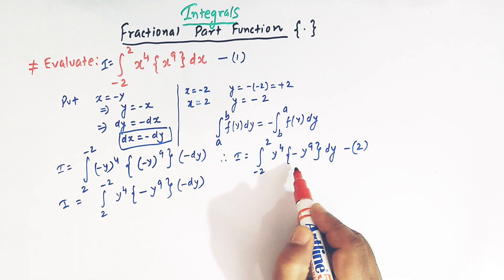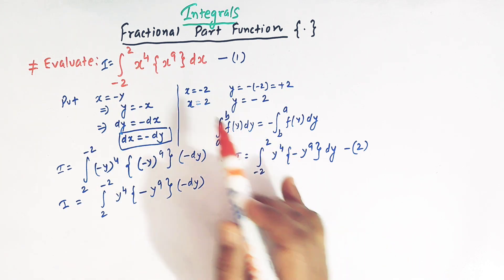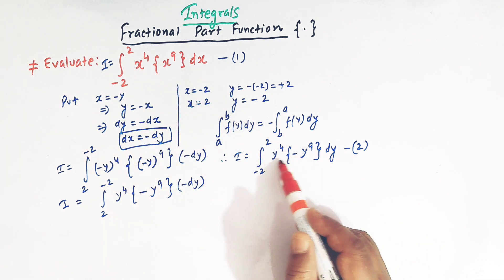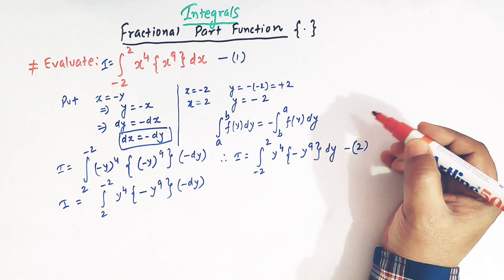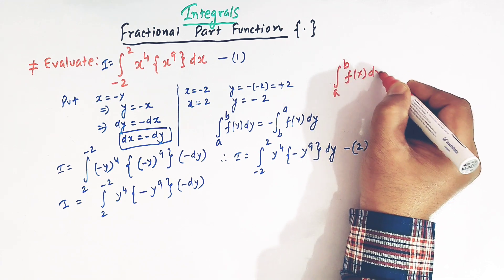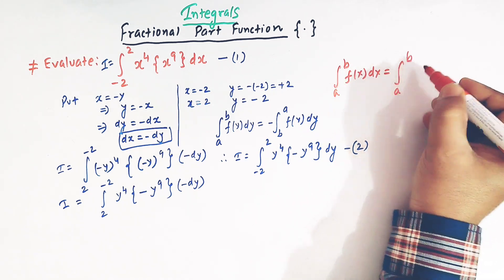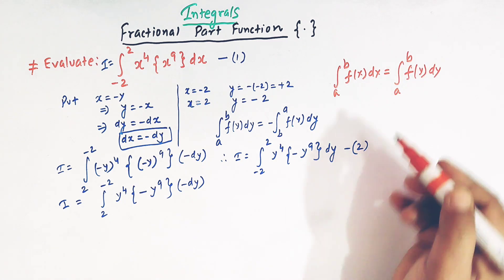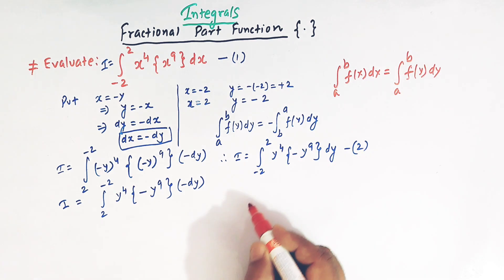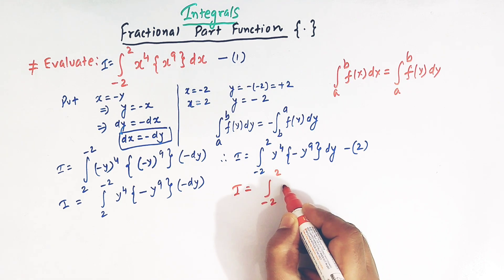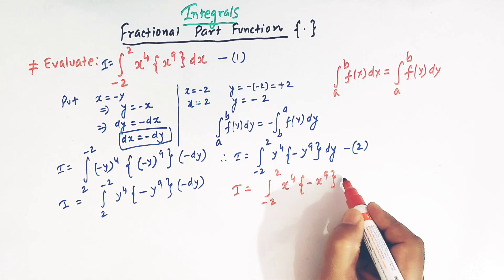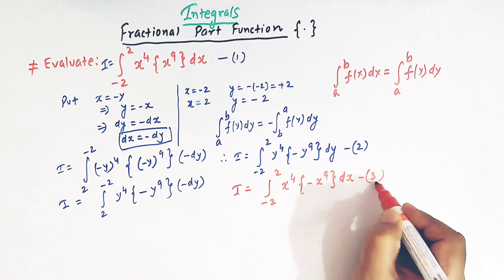So now here we see that integral 1 and integral 2 are both identical, except here we have the variable x and here we have the variable y. So from another property of definite integrals, that is the integral from a to b of f(x) dx can be written as the integral from a to b of f(y) dy — so we can change the variable. So now again replacing y by x, integral 2 can be written as the integral from minus 2 to 2 of x raised to 4 times the fractional part of minus x raised to 9, dx. So now we have this integral 3.